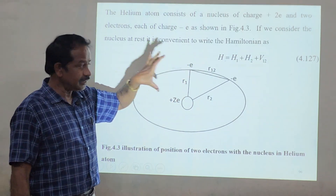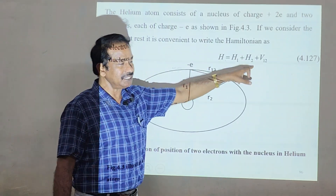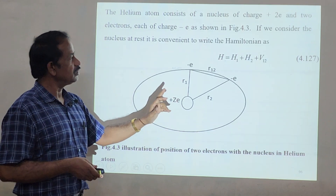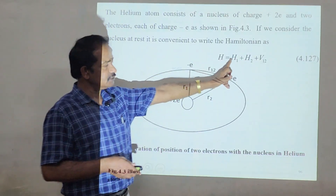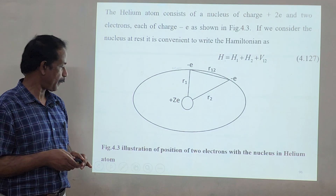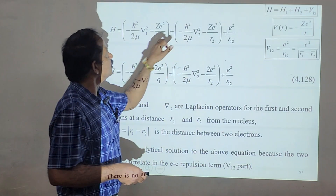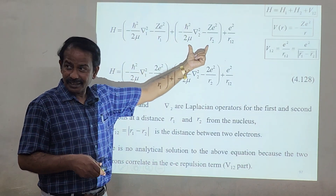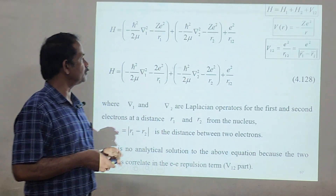We have two separate hydrogen atoms, and the moment we include the interaction energy — which is a positive value — the total energy of the system increases. The helium atom consists of a nucleus of charge +2e and two electrons each of charge −e. It is convenient to write the Hamiltonian as H1 + H2 + V12, where V12 is the interaction energy between the two electrons, given by +e squared over R12.